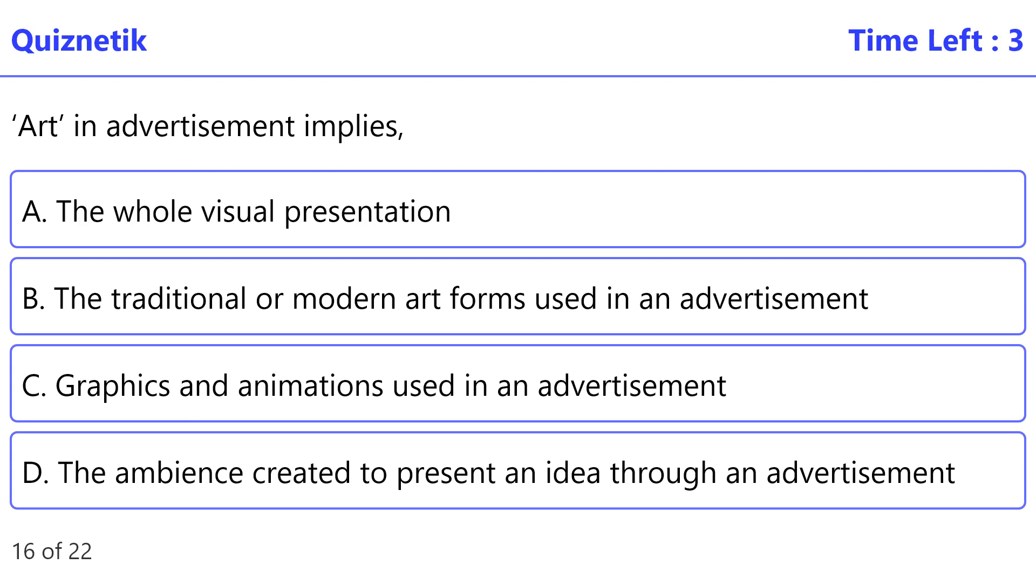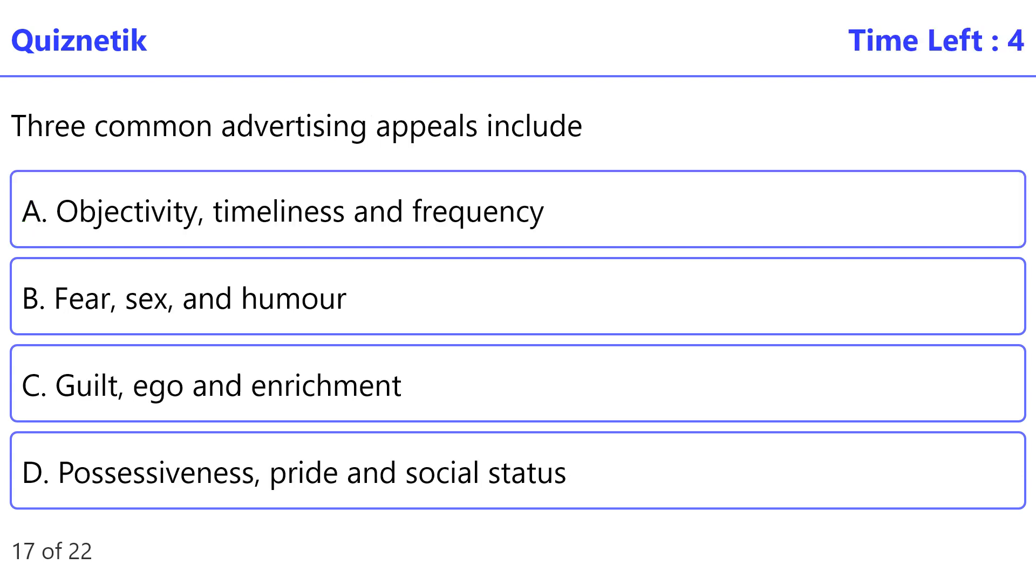Art in advertisement implies correct option A, the whole visual presentation. Three common advertising appeals include correct option B: fear, sex, and humor.